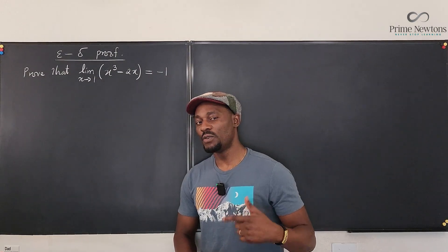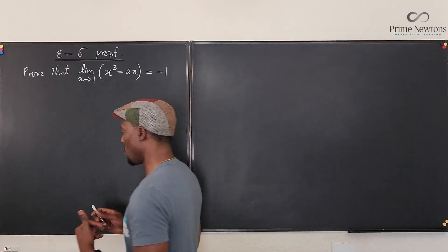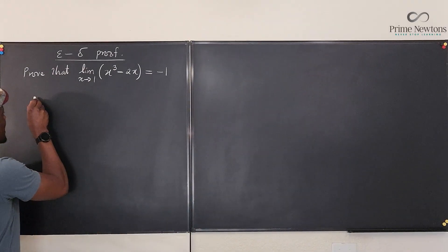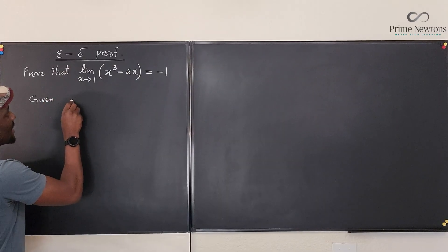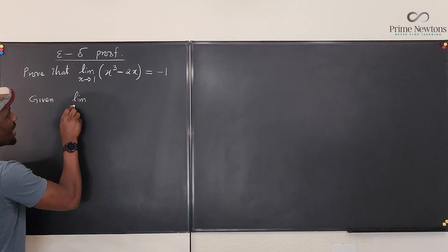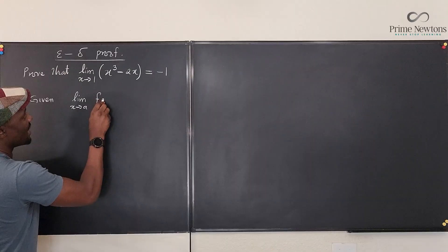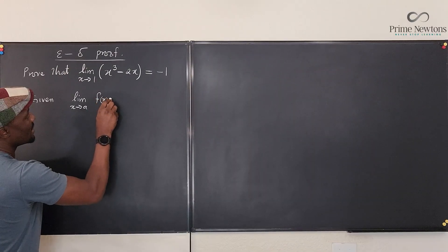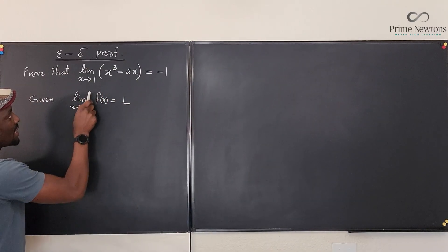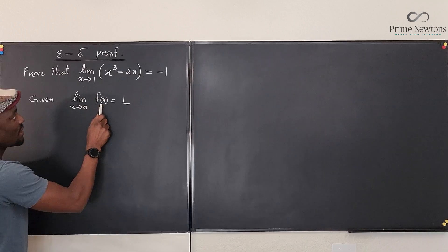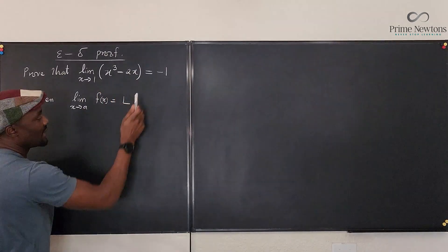Let's go over the statement of proof first. Given that the limit as x approaches a of f of x is equal to L, just as we have it here. In this case, a is one, f of x is x cubed minus two x, and L is minus one.